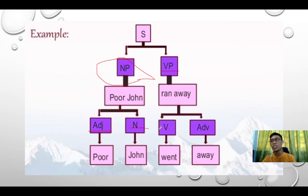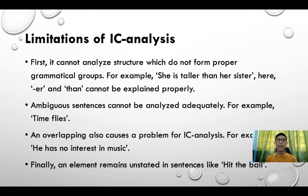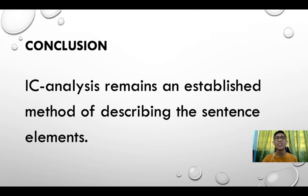For the limitations of IC analysis: First, it cannot analyze structures which do not form proper grammatical groups. For example, in 'she is taller than her sister,' the suffix '-er' and 'than' cannot be explained properly. Second, ambiguous sentences cannot be analyzed adequately — for example, 'time flies.' Third, overlapping also causes a problem in IC analysis — for example, 'he has no interest in music.' Finally, when an element remains unstated in sentences like 'hit the ball,' IC analysis falls short.